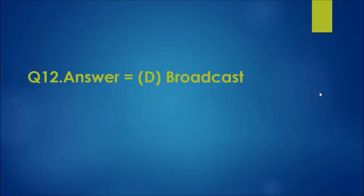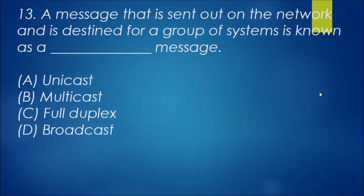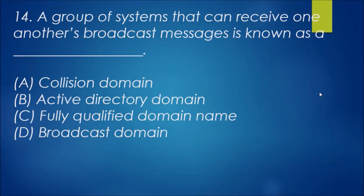Question 13: a message that is sent out on the network and is destined for a group of systems is known as a blank message. Looking at the last one, broadcast means all, so it's not that. Full duplex is a way of communication, so it leaves us unicast and multicast. A group would suggest more than one, so it's not uni, it will be multicast.